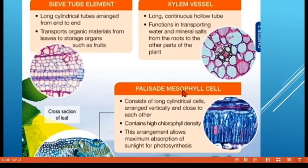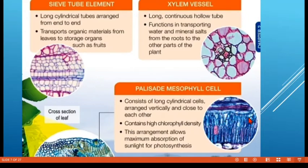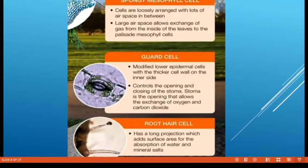Palisade mesophyll cells are found in leaves. Their structure is long cylindrical cells arranged vertically, close to each other, containing many chloroplasts for photosynthesis. The vertical arrangement allows maximum absorption of sunlight for efficient photosynthesis.